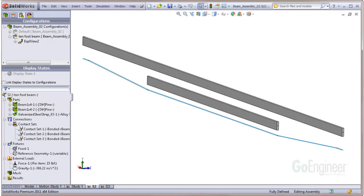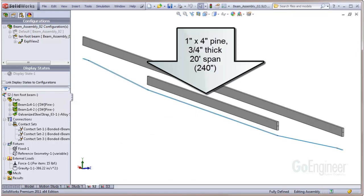This exploded view shows the modification. There is a steel strap on the bottom and it's only about 15 thousandths of an inch thick. The beam members are each 1 by 4 pine lumber, 3 quarters inch thick, and the maximum span is 20 feet.